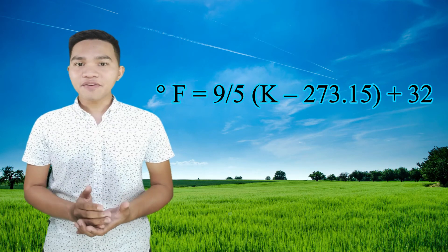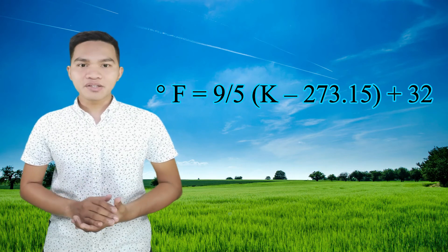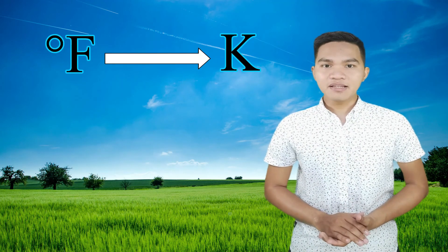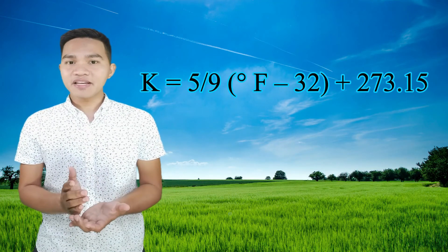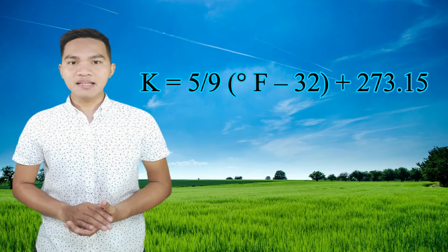What if you are in New York and need to convert degrees Fahrenheit to Kelvin or Kelvin to degrees Fahrenheit? To convert Kelvin to degrees Fahrenheit, use this formula: degrees Fahrenheit equals 9 over 5 times the difference between Kelvin and 273.15, plus 32. To convert degrees Fahrenheit to Kelvin, use this formula: Kelvin equals 5 over 9 times the difference between degrees Fahrenheit and 32, plus 273.15. These formulas are formed from our previous formulas.